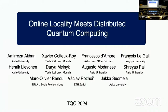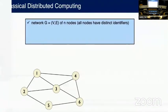I will talk about distributed quantum computing. I will start with a brief description of classical distributed computing. We consider a network represented by a graph with n nodes. Each node represents a processor and each edge represents a communication channel.